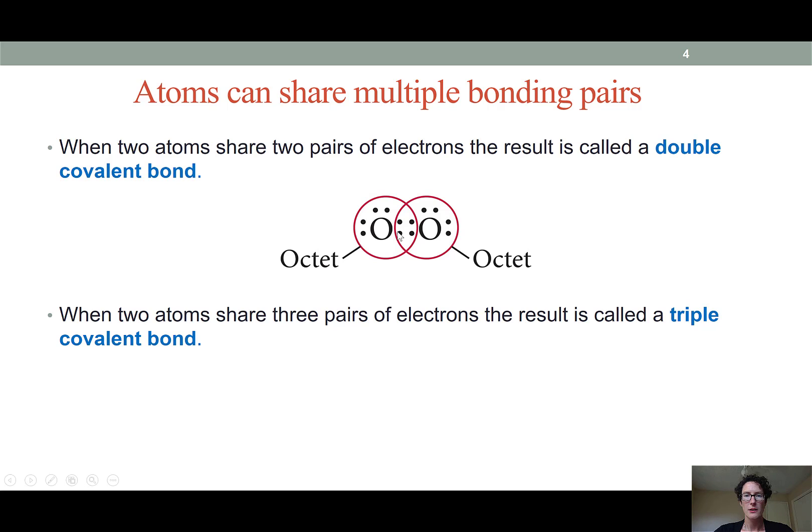By sharing two of its valence electrons with its neighbor, each oxygen effectively has eight valence electrons. What we're seeing is like a Venn diagram indicating the octet around each oxygen atom. Through sharing of two pairs of electrons each oxygen gains an octet.